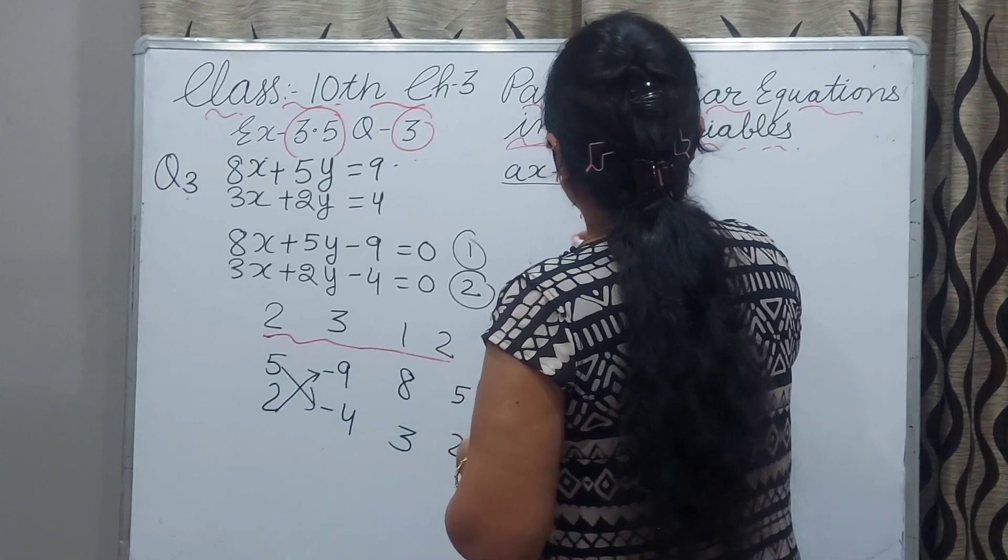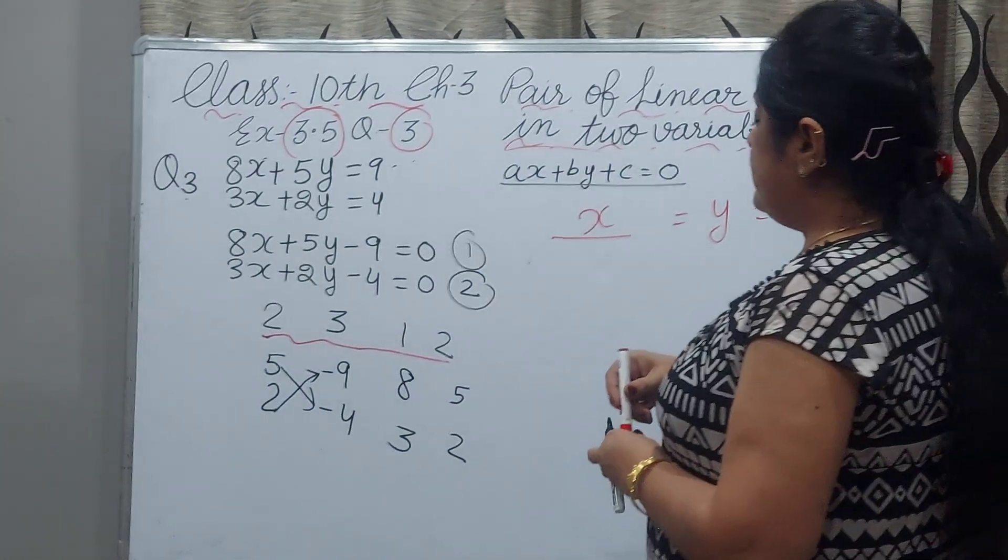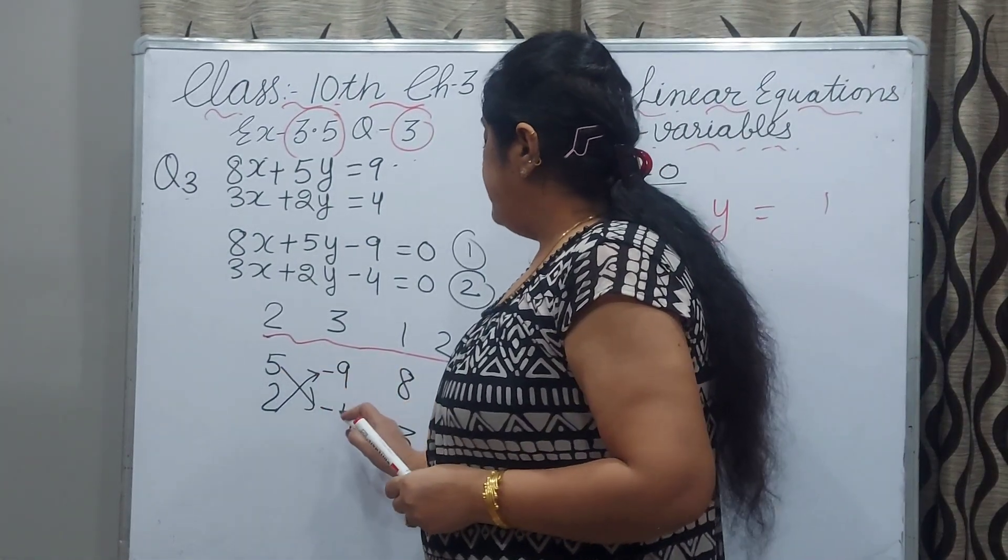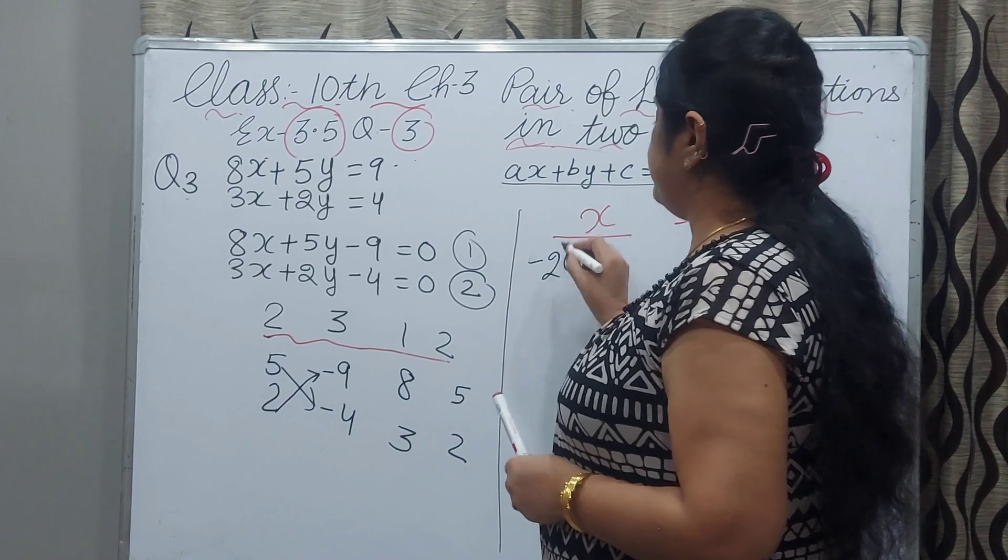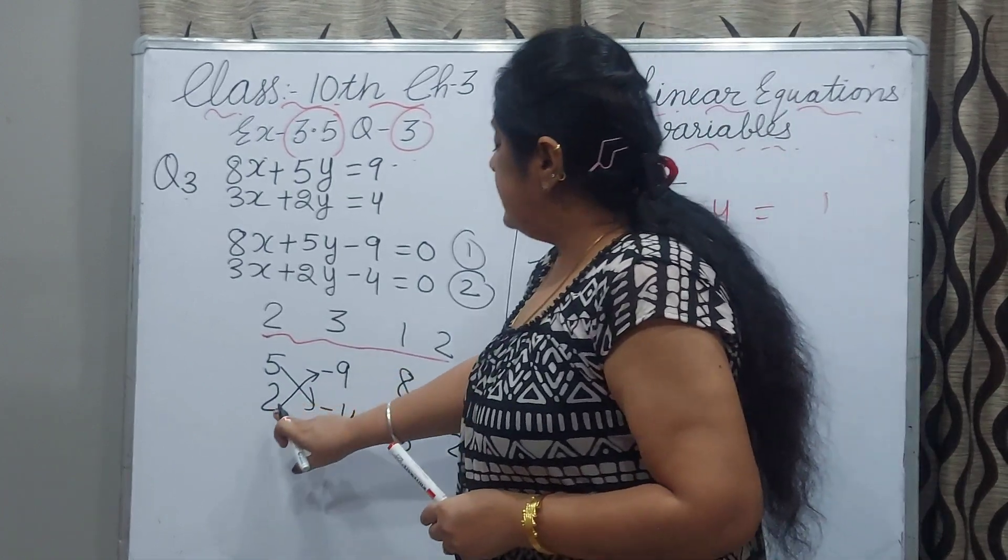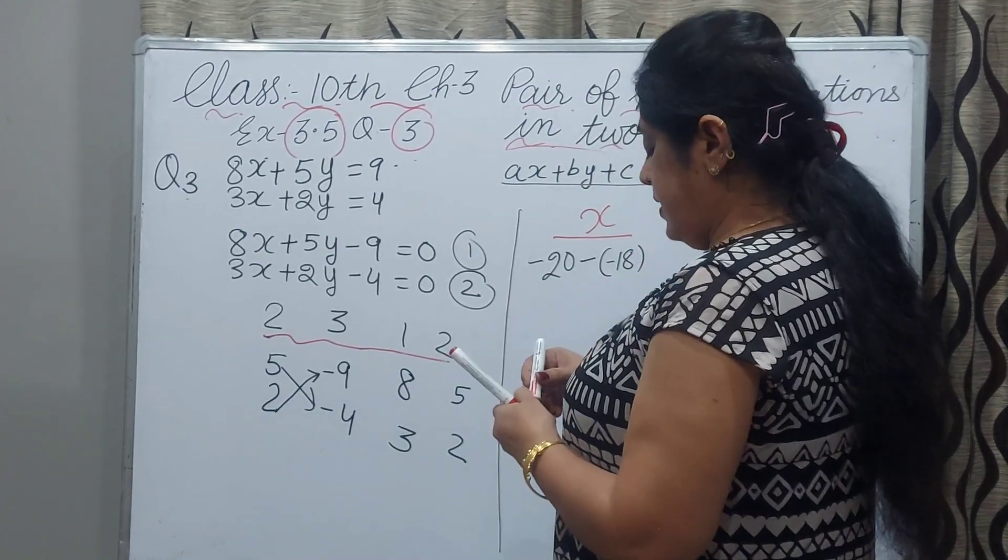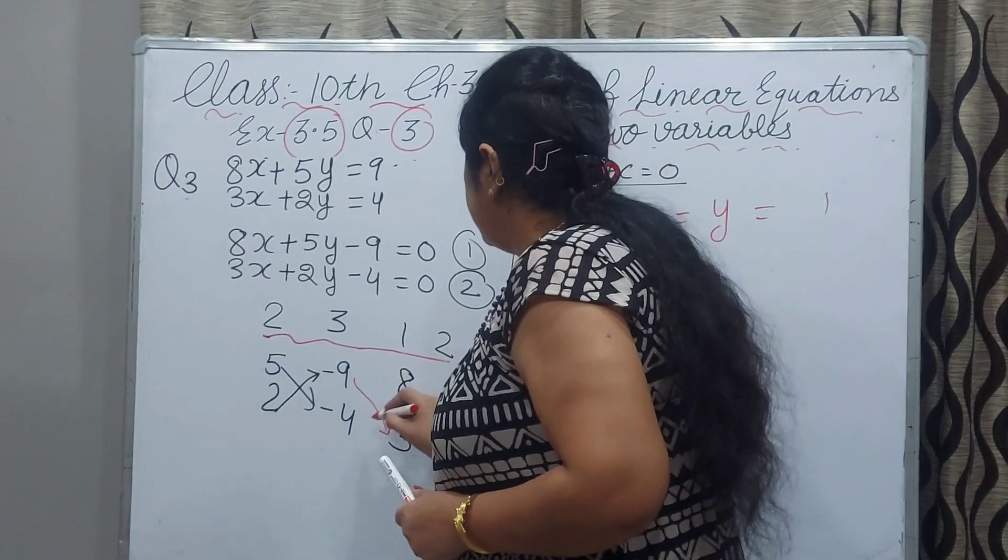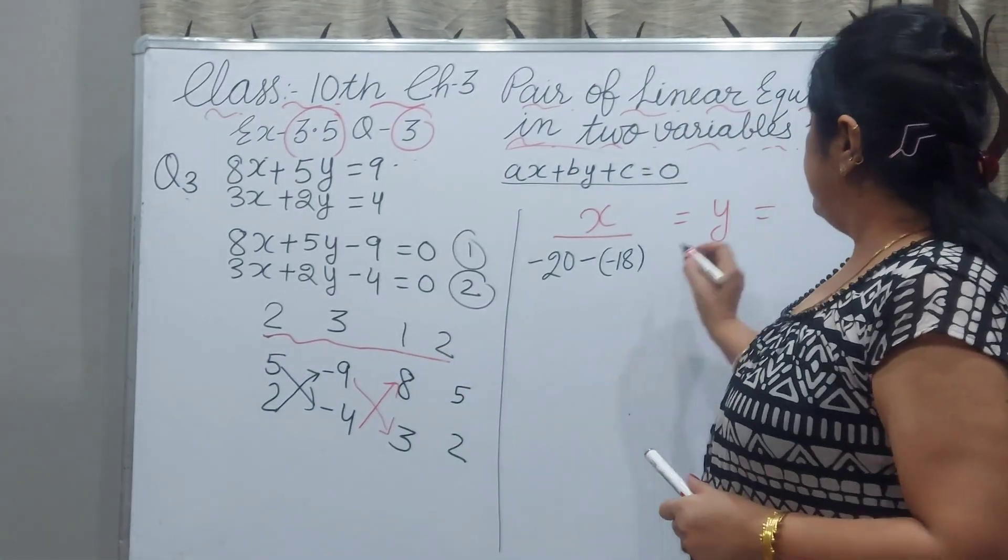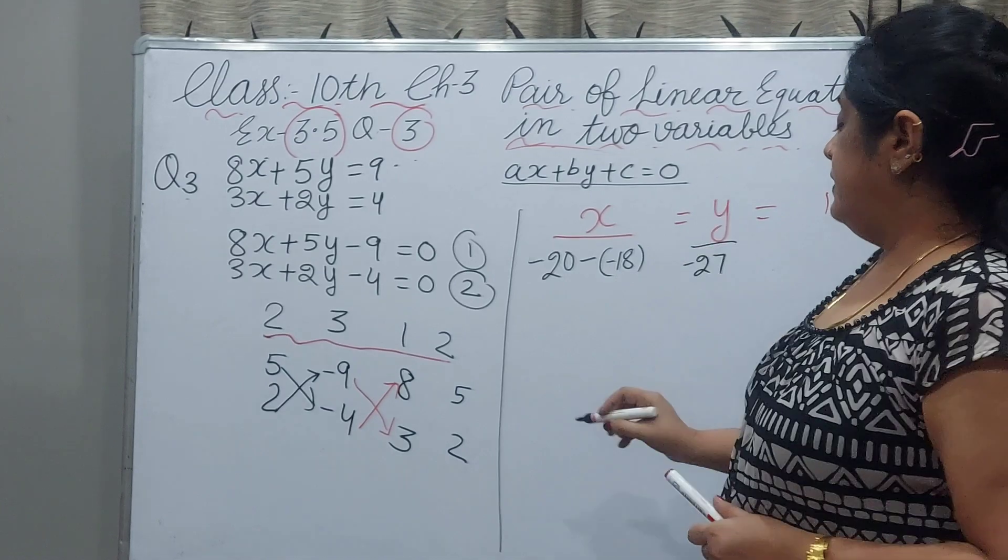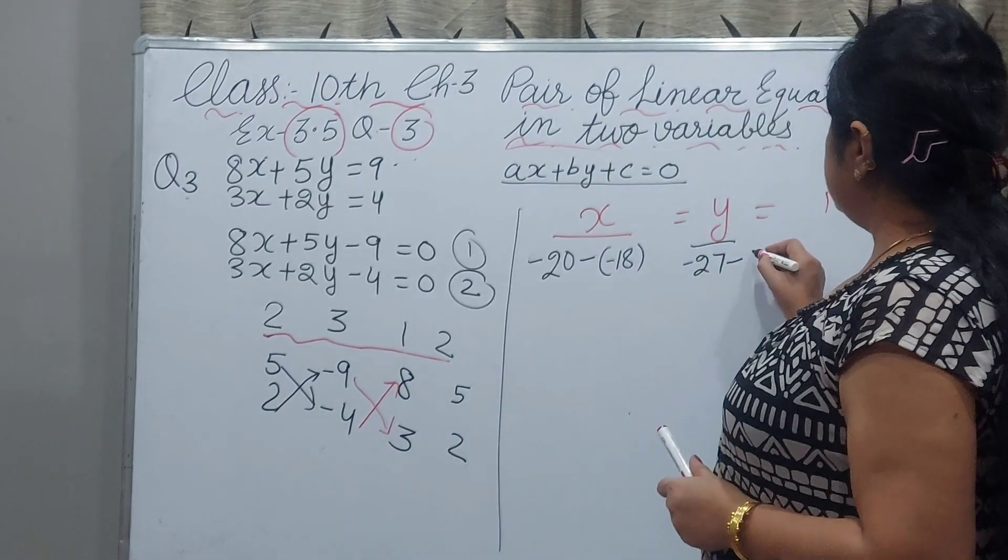We write here x and here equals y and here equals 1. For the value of x, 5 multiply minus 4, it will be minus 20, and put minus sign, and then 2 into minus 9 minus 18. And now for y, minus 9 multiply 3 minus 27, and between minus sign, and minus 4 times 8 minus 32.